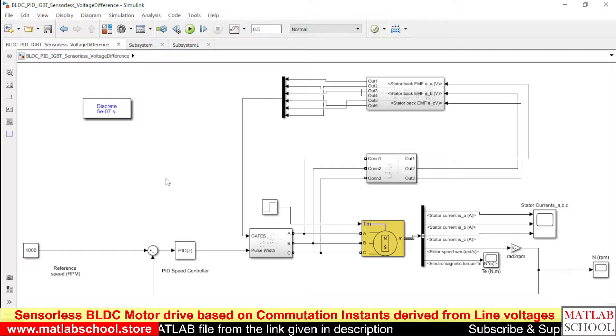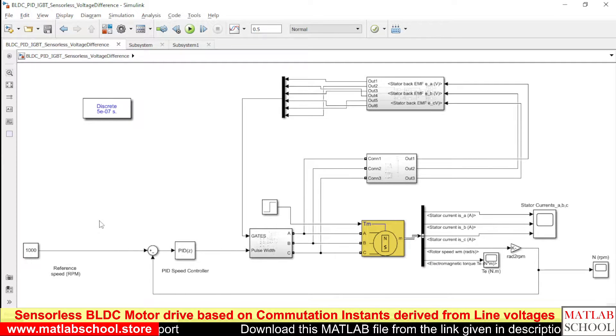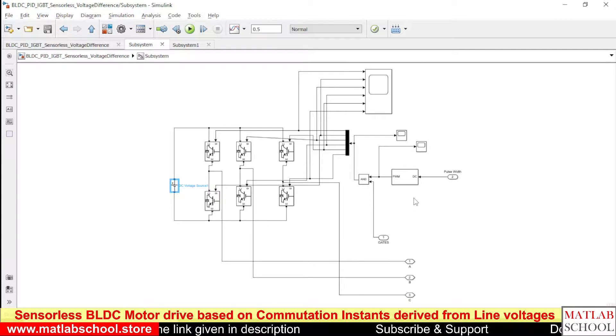This is the model. And here we have the reference speed of 1000 RPM that is compared with the actual speed. The difference of actual speed and the reference speed is the error. It is given as input to the PID controller. The output of the PID controller is given as input to the PWM generator block.